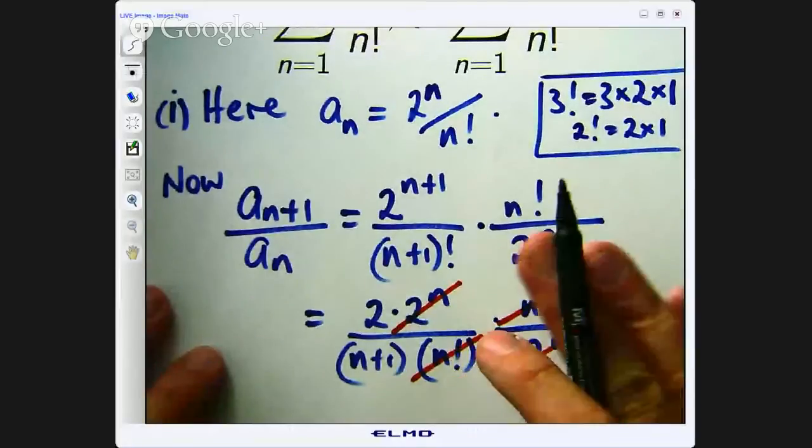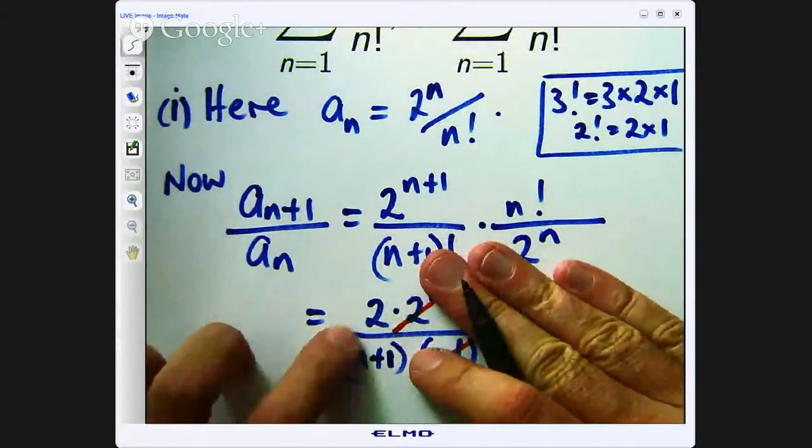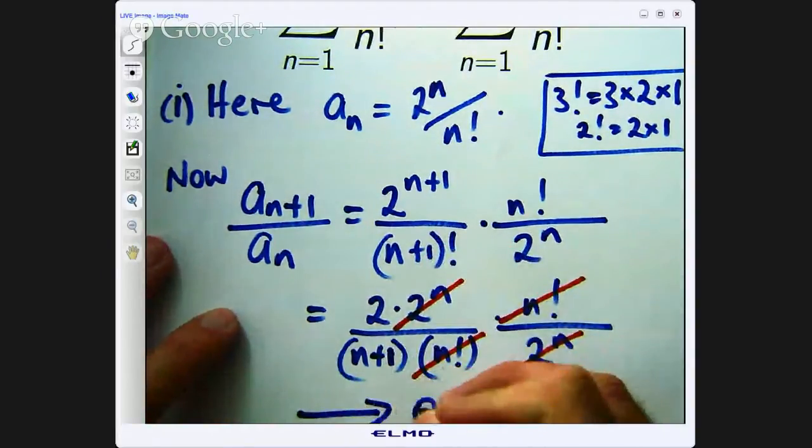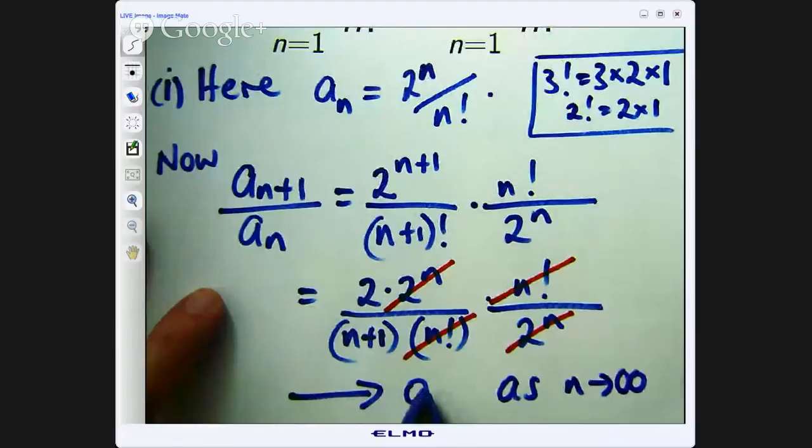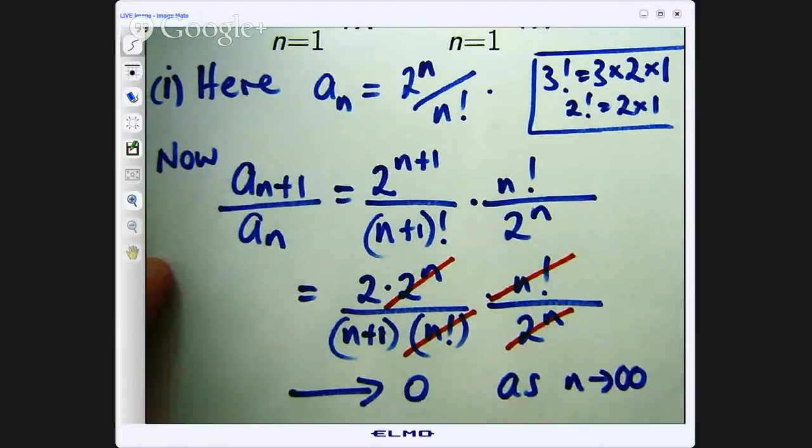So that part has just really involved some algebra and some simplification. Now what we want to do is take the limit of the ratio a sub n plus 1 over a sub n as n goes to infinity, and see what happens. All right, so we're left with this. Now as n gets large and positive, 2 over n plus 1 becomes very small. And in fact, this will go to 0 as n approaches infinity.